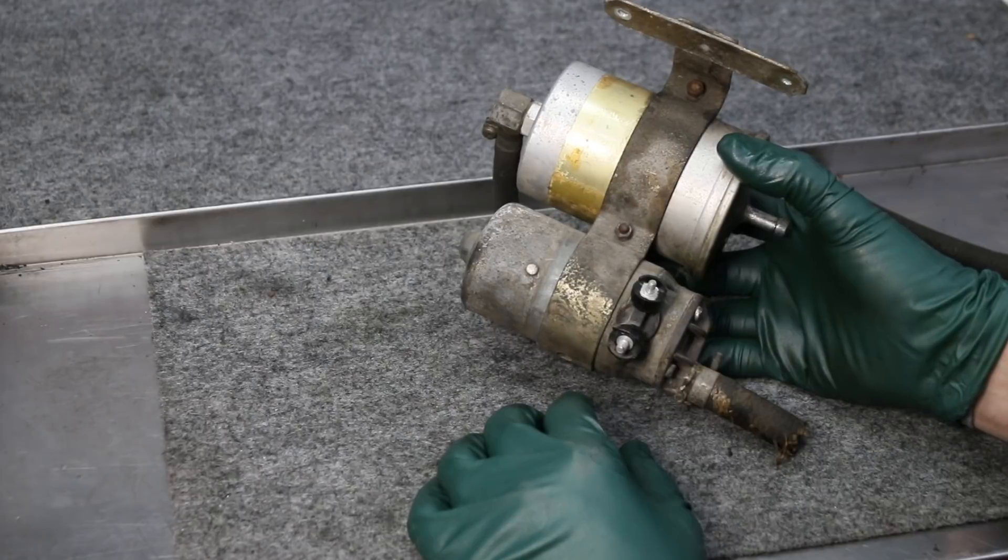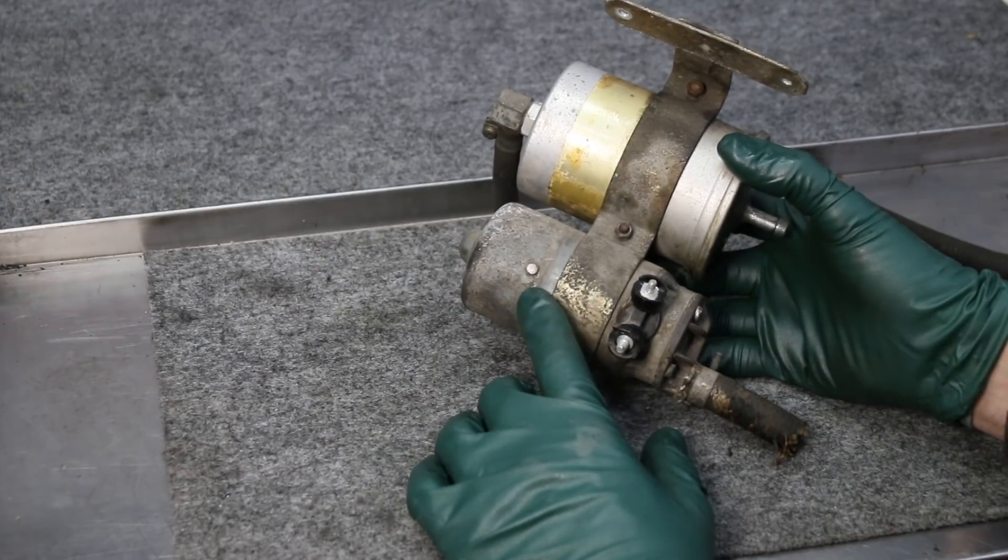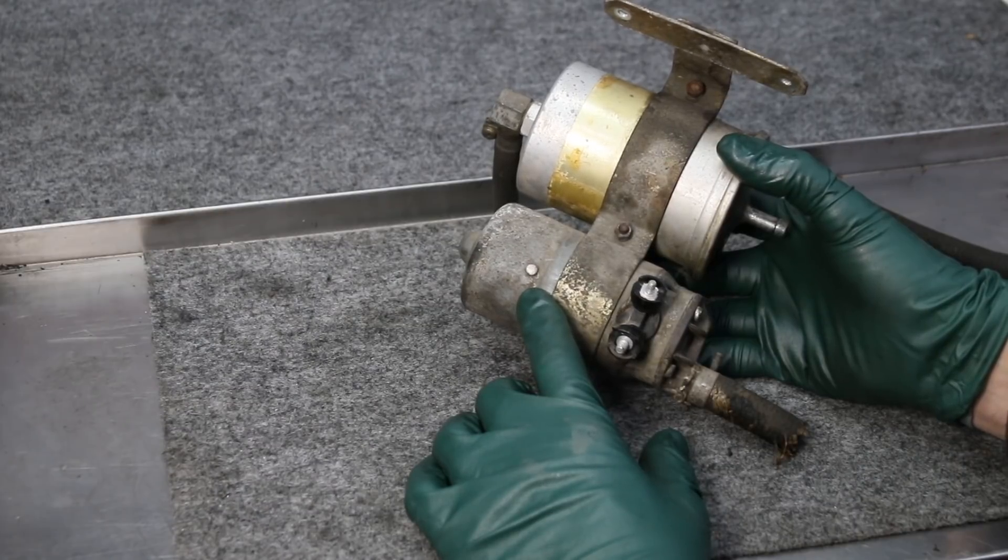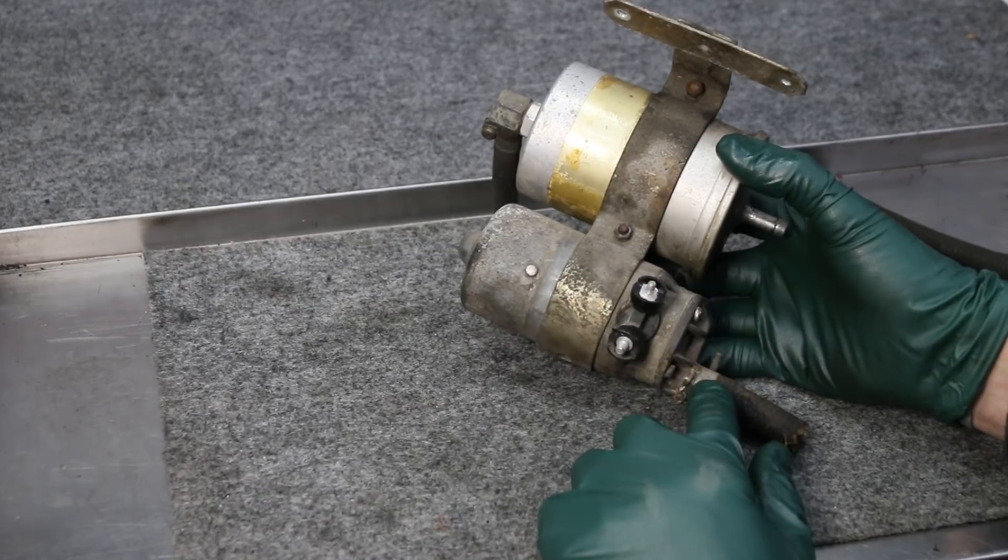They came on the early 450 SLs, 350 SLs. They were used on the early 70s Porsches and the Alfa Romeos and there's probably a few others that use this style of electric fuel pump.